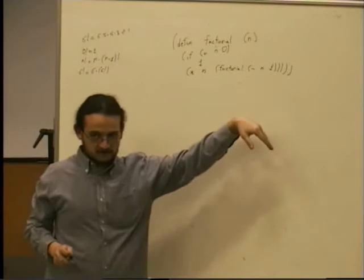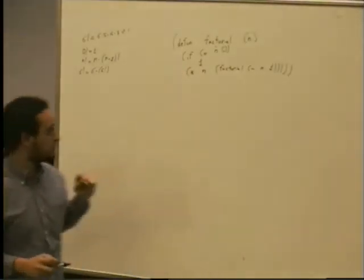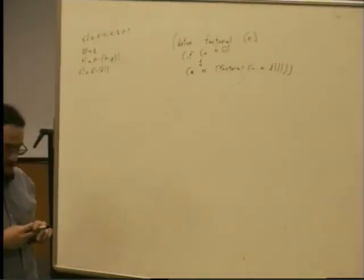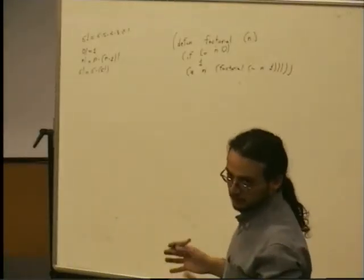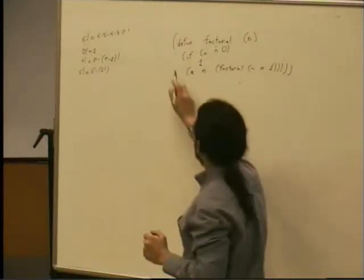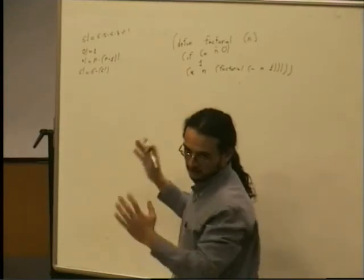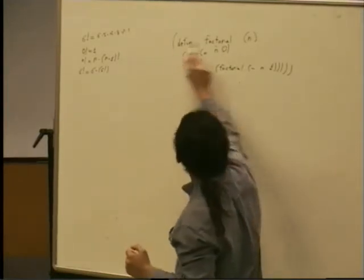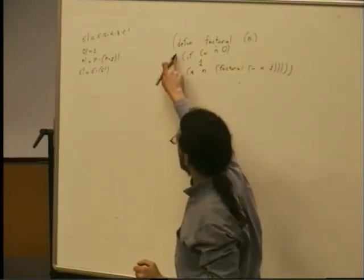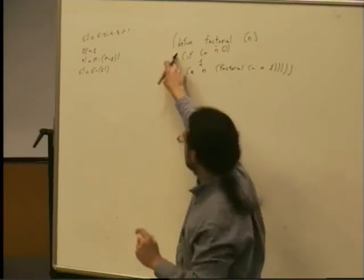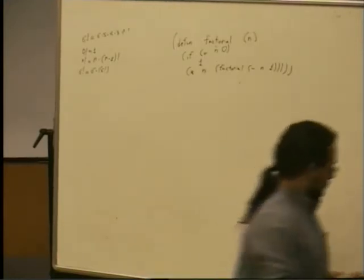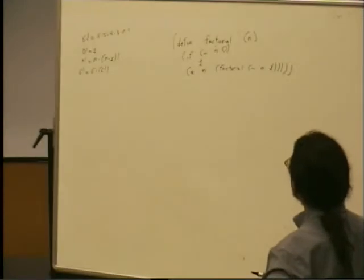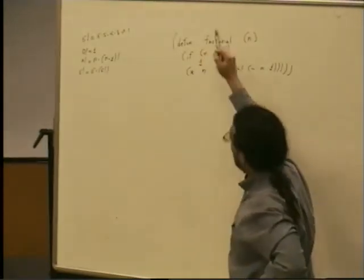With Emacs you don't have the problem of counting parentheses. Whenever you close a parenthesis, the matching open parenthesis blinks. It's much easier to write this code. Another feature of Emacs I forgot to mention before is the automatic indentation. It's very useful. When you write this code and you are in the appropriate major mode, you can just hit tab on a line and the code will be indented automatically the right way.